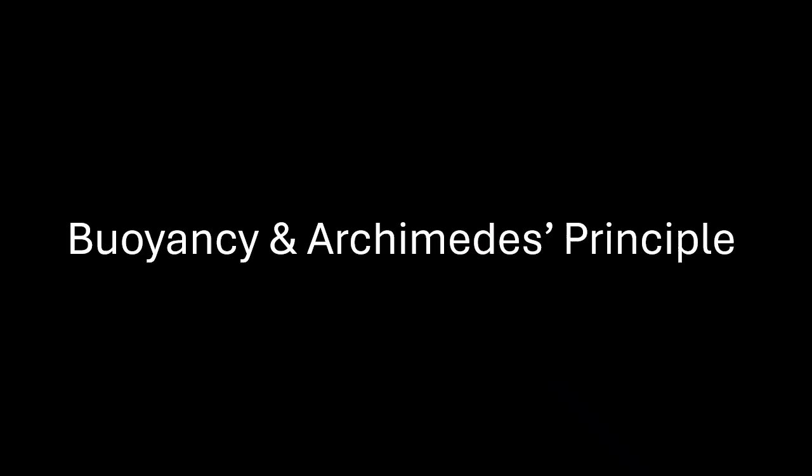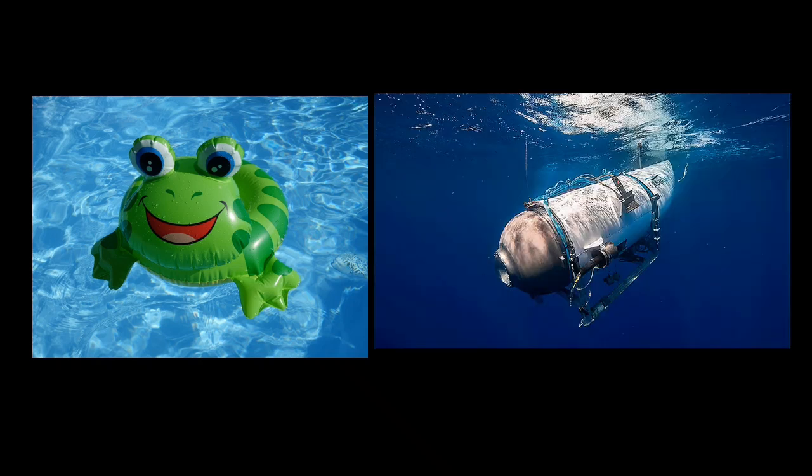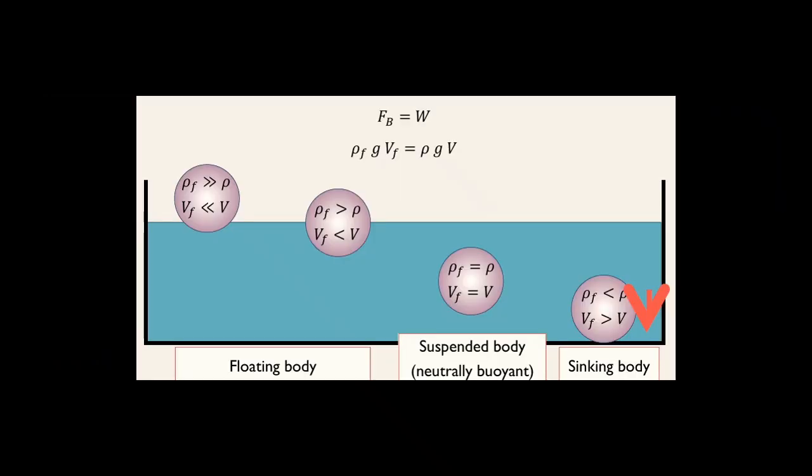Now, buoyancy and Archimedes' principle. Now, the juicy part. Why things float? Archimedes discovered that any object submerged in a fluid experiences an upward force equal to the weight of fluid it displaces. Buoyant force. If buoyant force bigger than weight, objects will float. If buoyant force less than weight, objects will sink. This lets fish hover, and scuba divers control their depths. And as you see here, there's a floating body, suspended bodies, and sinking bodies.